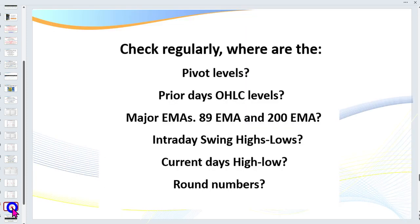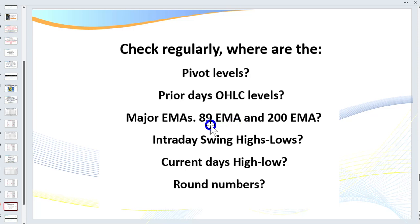As we go to the charts, there are a few things to check regularly: where are our pivot levels, and where are our prior day open, high, low, and close levels. These indicators are available on virtually every trading platform for free. We also want to know where our major EMAs are — both on the entry chart and a higher time frame — plus our intraday highs and lows and round numbers. These are what we call predictive indicators; most indicators are lagging.